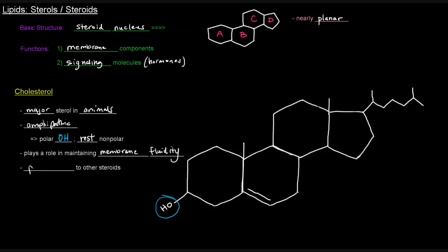Cholesterol is also important as a precursor to other steroid molecules. Something that's actually pretty important to that is the numbering system of cholesterol. It's 27 carbons long, and it's numbered starting from carbon number 1, going around 1 through 10.